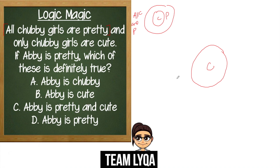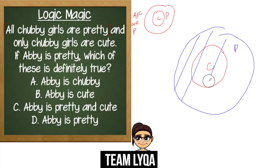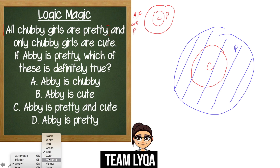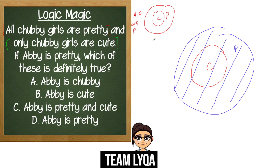The next statement says: only chubby girls are cute. 'Only' means they share the same circle — the circles are the same size. So only chubby girls are cute: whoever is chubby is also cute, and if you're cute, you're chubby. There are no cute girls who are not chubby. It's an exclusive relationship — walang ibang cute maliban sa mga chubby, at lahat ng chubby ay cute. No one who is not chubby can be cute.